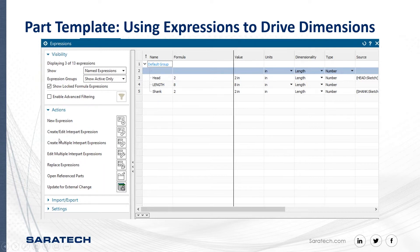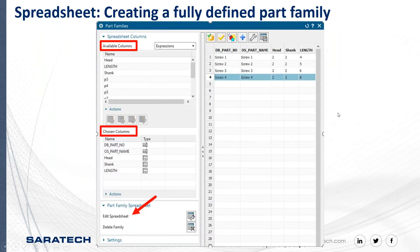In this example, this part is fully defined using three dimensions, which we have assigned expressions to. We have named them the head, the length, and the shank. You can use expressions rather than constants to define dimensions because it allows you to use these expressions in the part family Excel sheet to assign multiple values to each expression. Once you have a fully defined model template created with its dimensions driven by named expressions, we can create the part family.